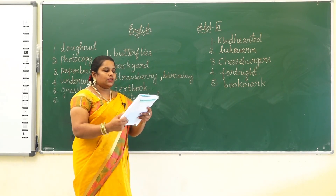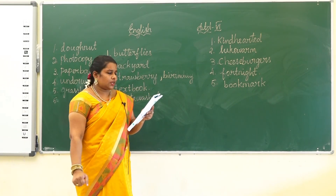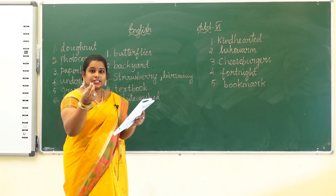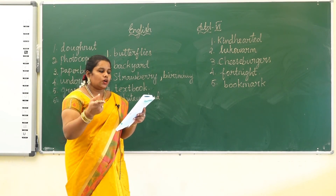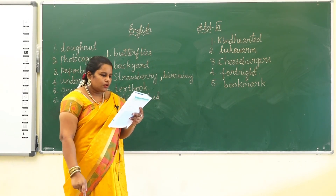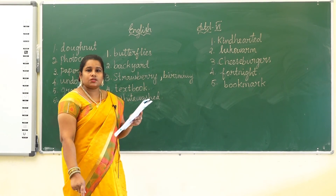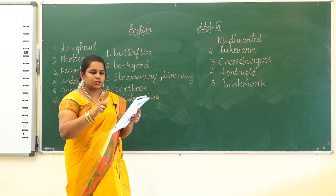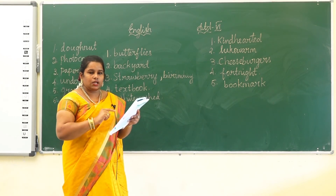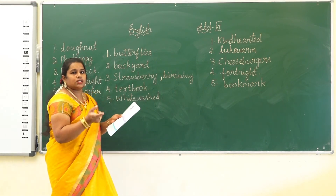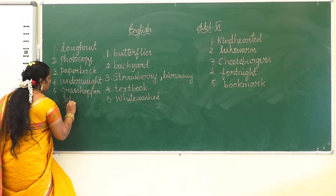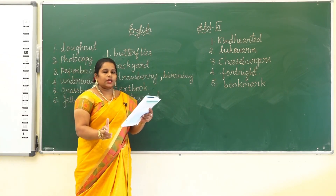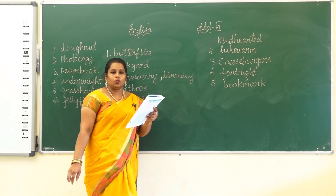Last pair: the first picture shows jelly — a sweet we can eat — and the second picture shows a fish swimming in water. We can merge them: jelly plus fish gives us jellyfish. We combine them to form the new compound word jellyfish.